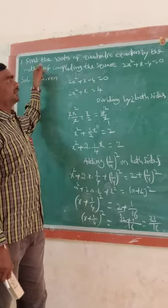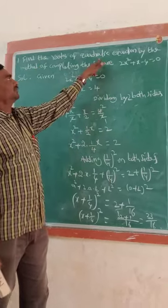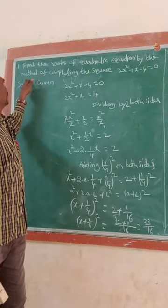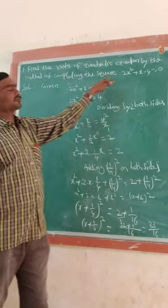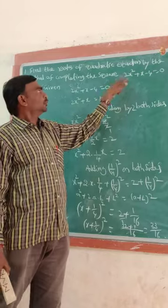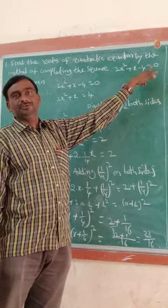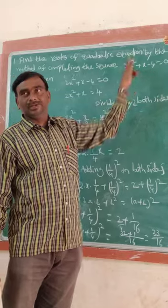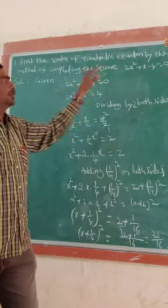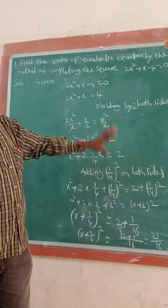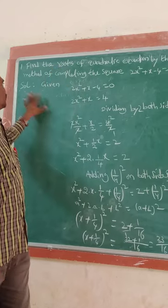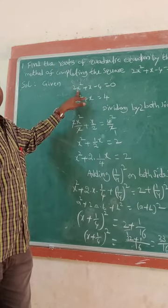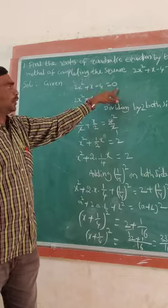Today we find the roots of the quadratic equation by the method of completing the square. The given equation is 2x² + x - 4 = 0. This is not yet in completing-the-square form, so we will find the roots. Solution: given the quadratic equation 2x² + x - 4 = 0.